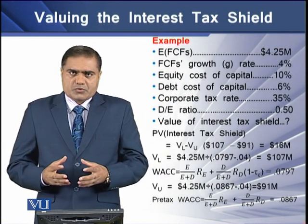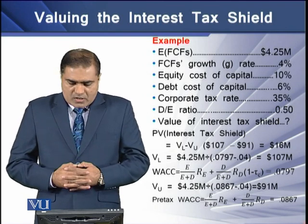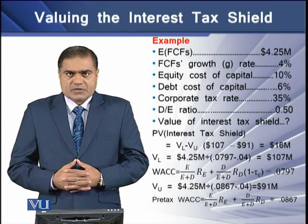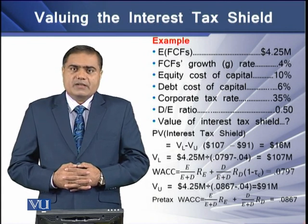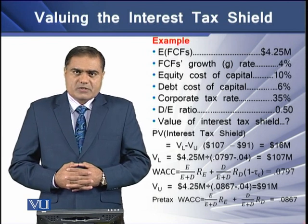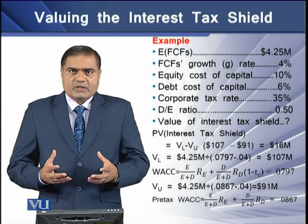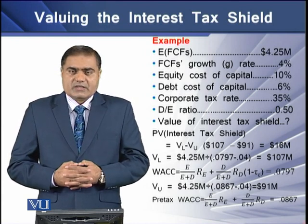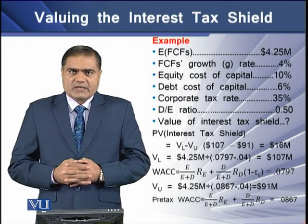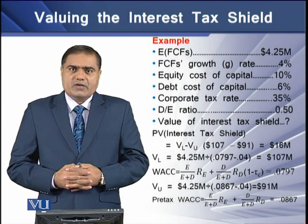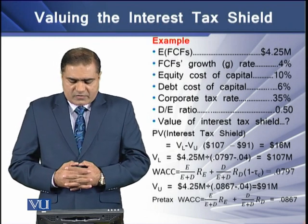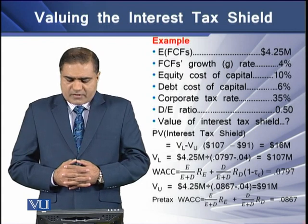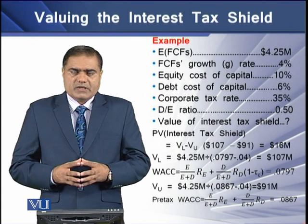Consider an example: expected future free cash flows are $4.2 million, growth rate is 4%, equity cost of capital is 10%, debt cost of capital is 6%, corporate tax rate is 35%, and the firm maintains a debt-equity ratio of 0.5. The value of the interest tax shield is the difference between the levered and unlevered firm values. Here, the levered firm value is $107 million and the unlevered firm value is $91 million, so the present value of the interest tax shield is $16 million.